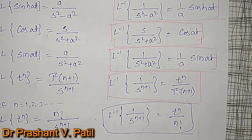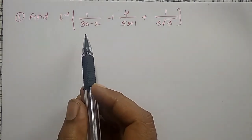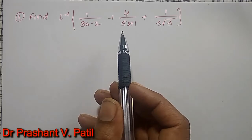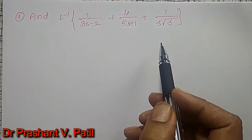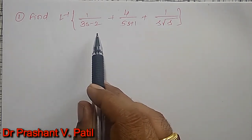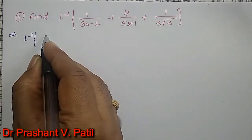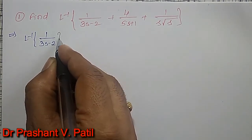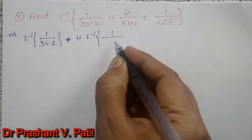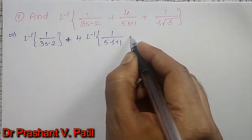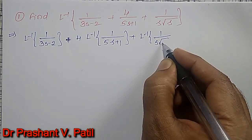So you can adjust the denominator such that it should come in one of the 6 forms only. In this example, we have to find the inverse Laplace transform of 1/(3S-2) + 4/(5S+1) + 1/(S·√S). Since the denominator has addition of terms, I can write them as separate Laplace transforms: inverse Laplace transform of 1/(3S-2) plus 4 times inverse Laplace transform of 1/(5S+1), plus inverse Laplace transform of 1/(S·√S).